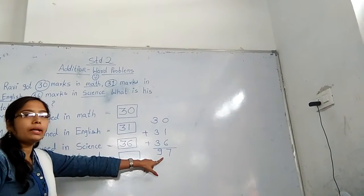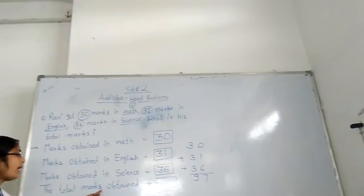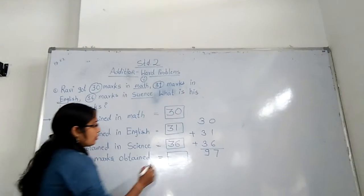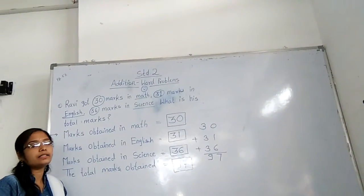So how many total marks? 97. So look here at the bottom. The total marks obtained. How many? 97. So write here 97. This is our answer.